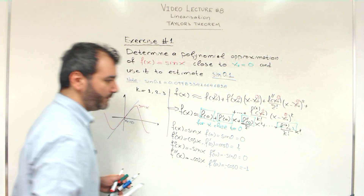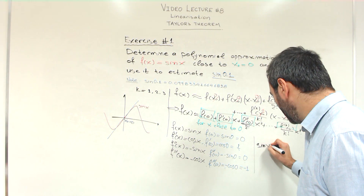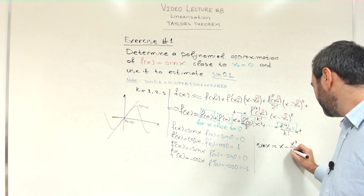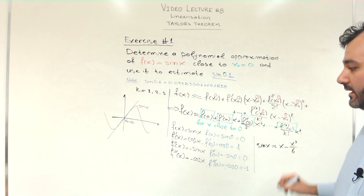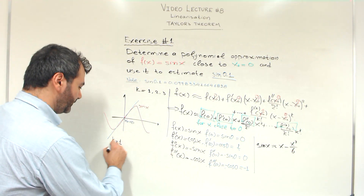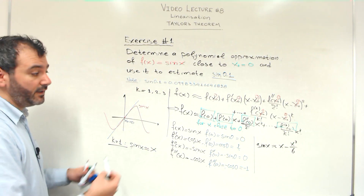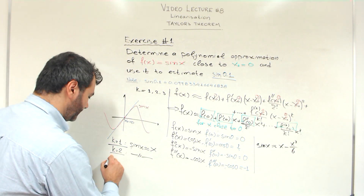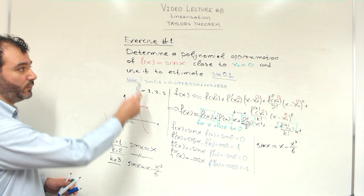We can plug these values into the approximation equation of Taylor's theorem and obtain that sine of x is approximately equal to x minus x³ divided by 3 factorial. Since 3 factorial is 6, this is the third order approximation of sine. To make it clearer: if we use k = 1, then sine of x ≈ x for x close to 0; for k = 2 it is the same; and for k = 3 this is the full approximation formula.